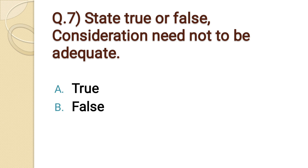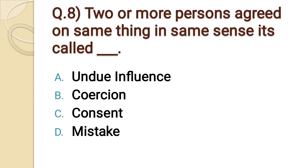Question number seven: State true or false — consideration need not be adequate. Option A: true. Option B: false. The correct option is option A: true.